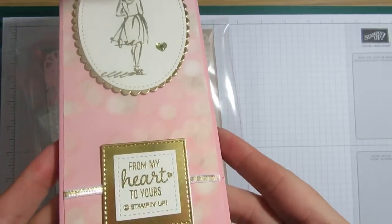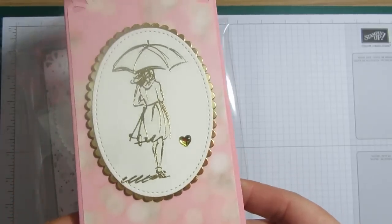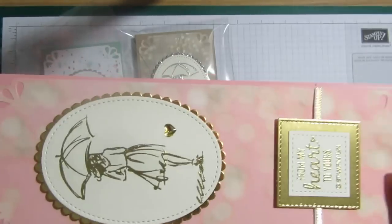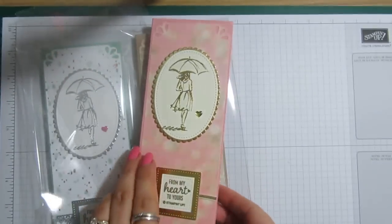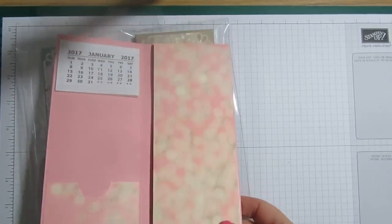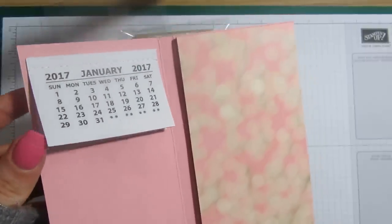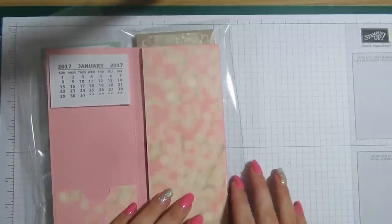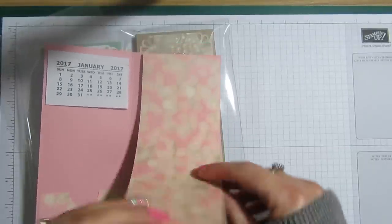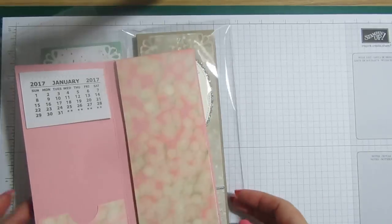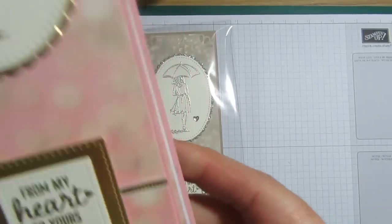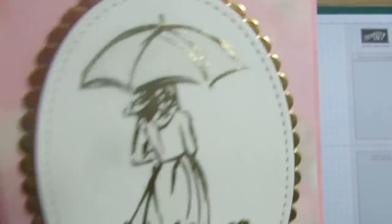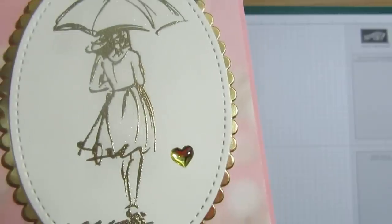It's gorgeous new designer series paper which is absolutely beautiful. So it's just a shopper's style notepad and you open it up and inside I've put a little calendar and it's also got a little pocket here and then the same DSP is on the notepad. The heat embossing that I've got on there and the stitch shapes and that stamp set is just absolutely beautiful.